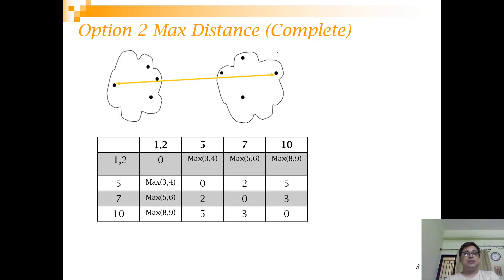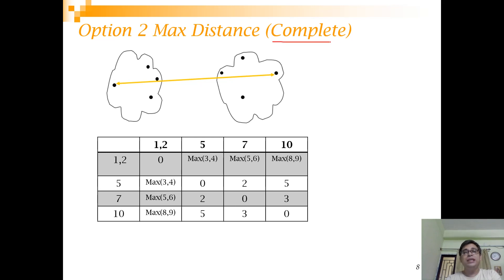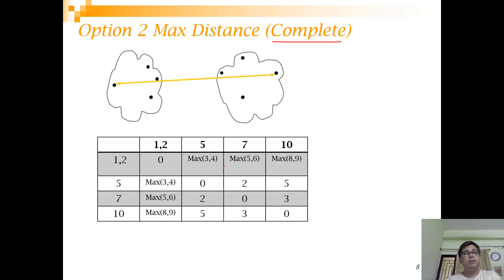Option two is max distance, also called complete linkage. Here you calculate the maximum distance between points such that one point is from one cluster and the other is from the other cluster. It is called complete linkage because you consider all pairwise distances to find the maximum. The proximity matrix is updated using the max of these distances instead of the min.